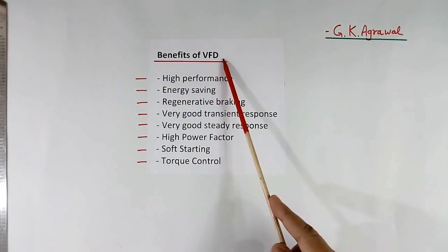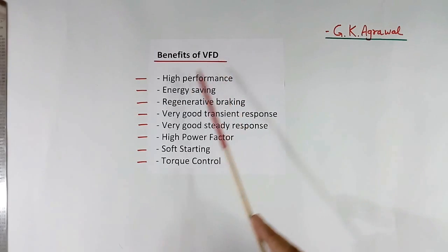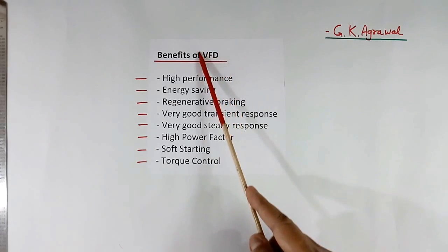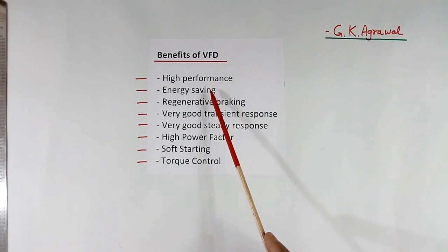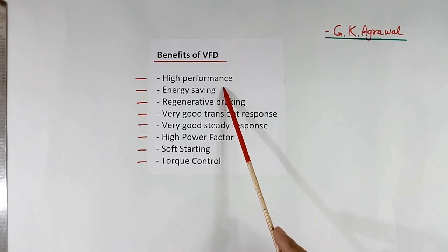Now benefits of VFD. First is performance is very high. Then energy saving. VFD system requires less electricity. In case of trains and railways, electricity expenditure are very high. They want to reduce it. To reduce the electricity expenditure, they use VFD, that too vector type.